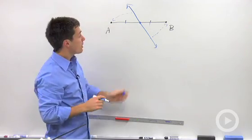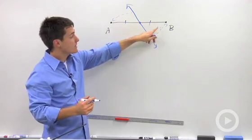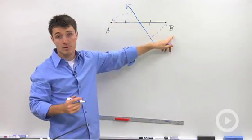What we want to do is we want to construct a line through this point, the midpoint, that will always be the exact same distance from A and B.